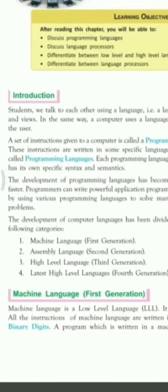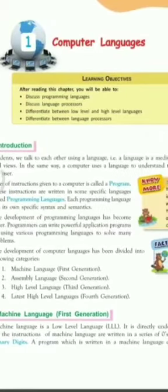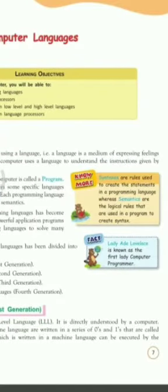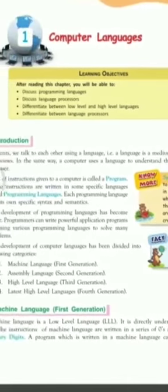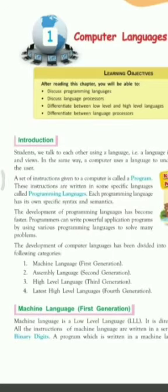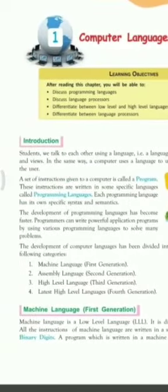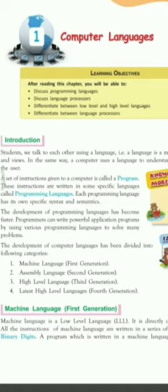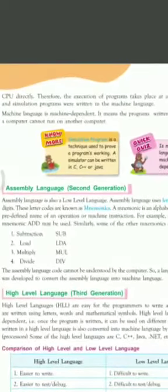Machine language means low level language. It is directly understood by the computer. All instructions of machine language are written in a series of zeros and ones, which are called binary digits. A program written in machine language can be executed by the CPU directly.